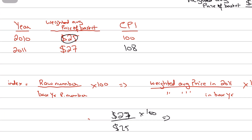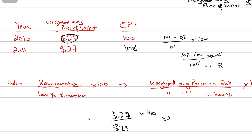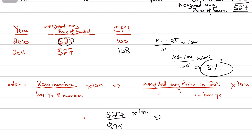Since the CPI is going up, we know there is inflation — the price level is rising. To calculate the inflation rate: new index minus old index, divided by old index, times 100. So 108 − 100 ÷ 100 × 100 = 8%. This tells us the country witnessed an inflation rate of 8% in 2011.